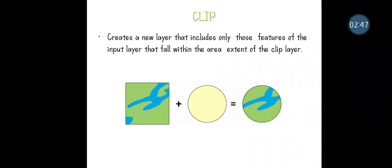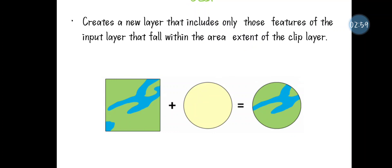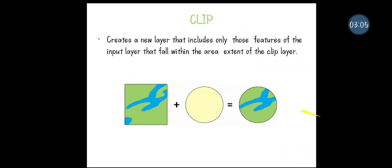The next tool is Clip. If you have existing feature data but want to extract only a particular area for your application, you can use the Clip tool. The Clip tool is used for clipping a particular area of a feature type, and that particular area will be represented in the output.